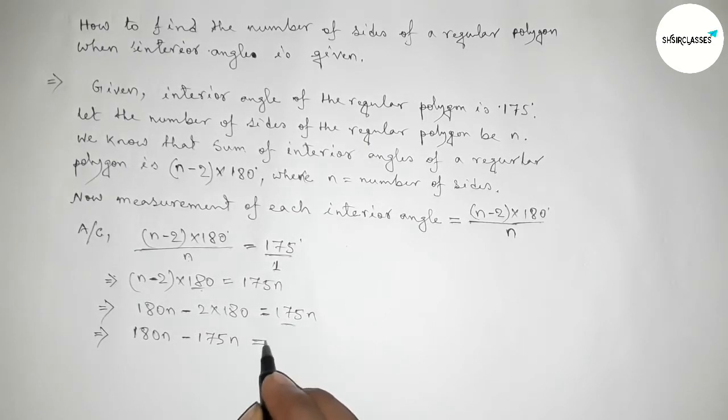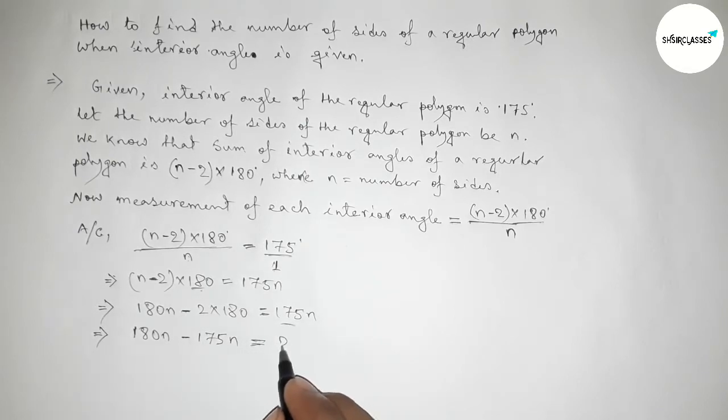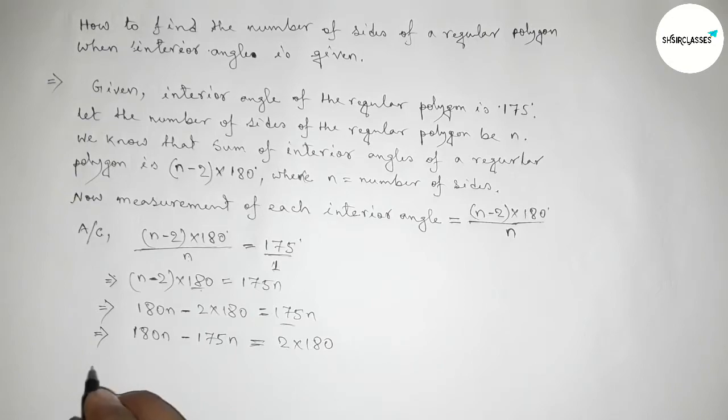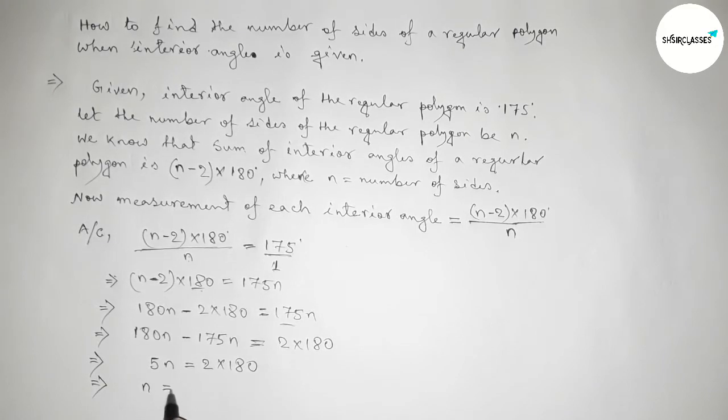We shift 180n to this side and write this on the right hand side. Subtracting, 180 minus 175 gives 5n equals to 2 × 180. Now we have to find the value of n.